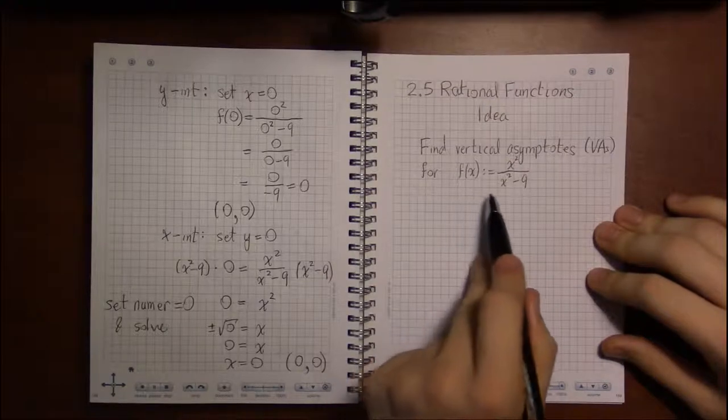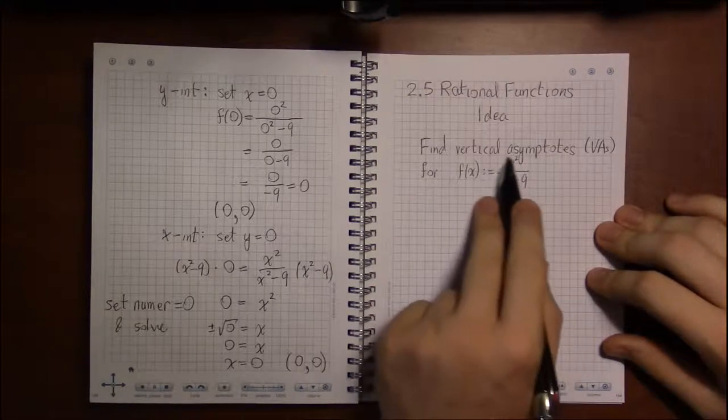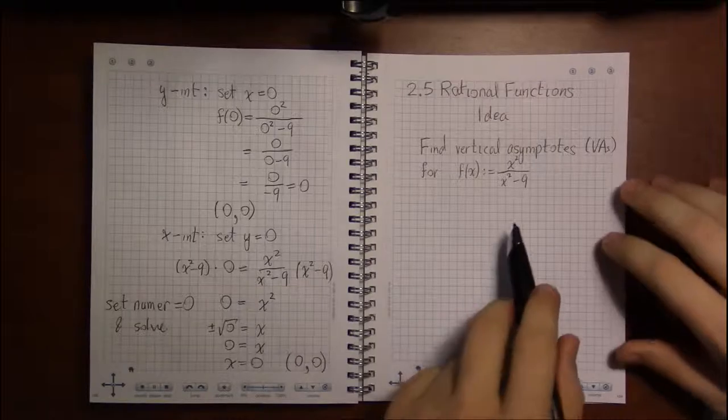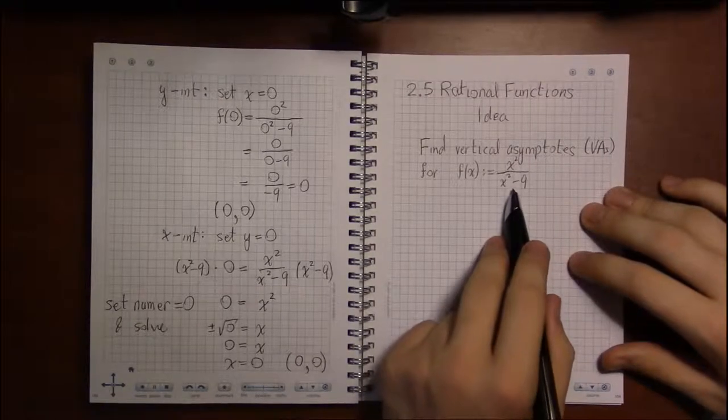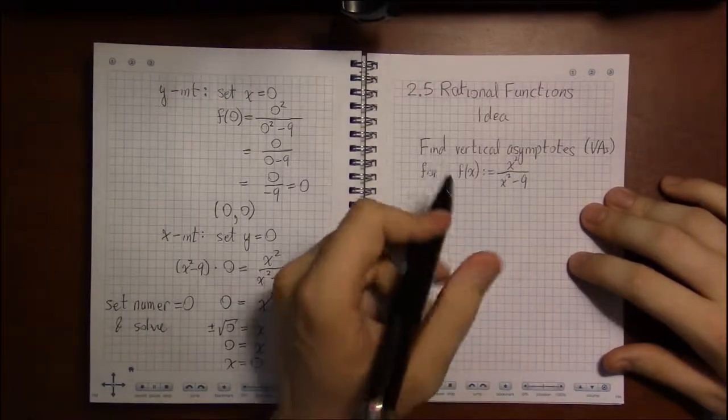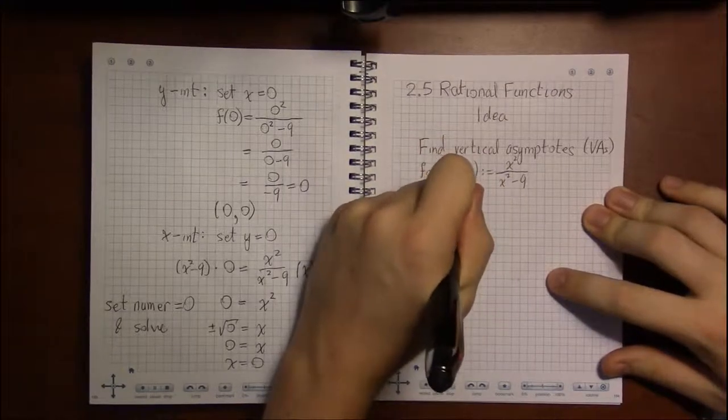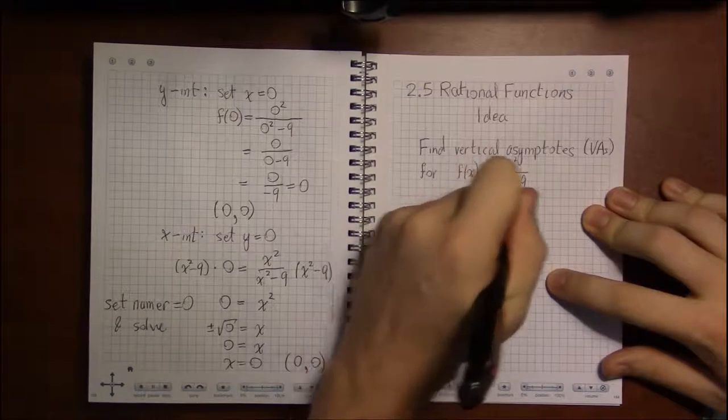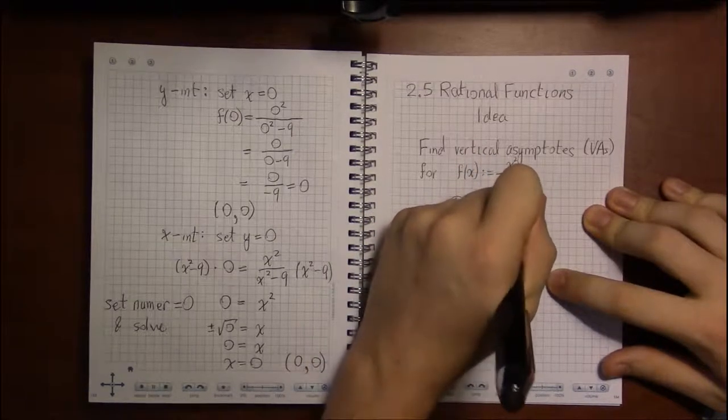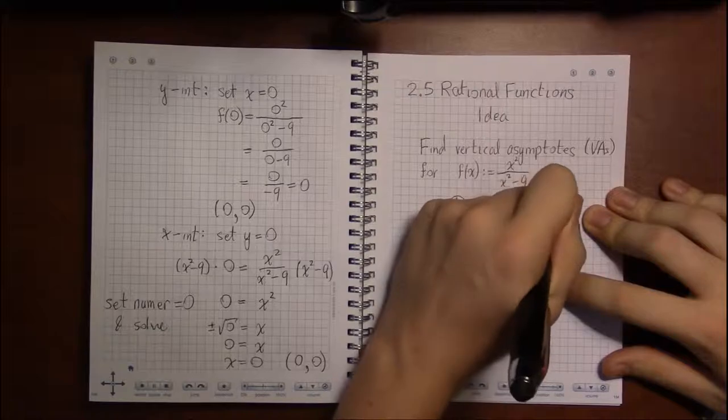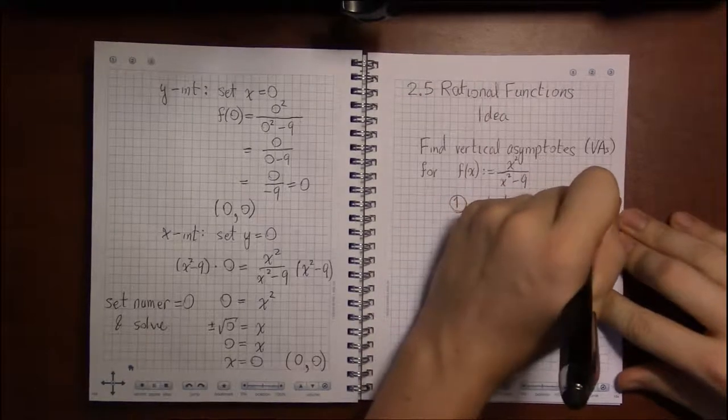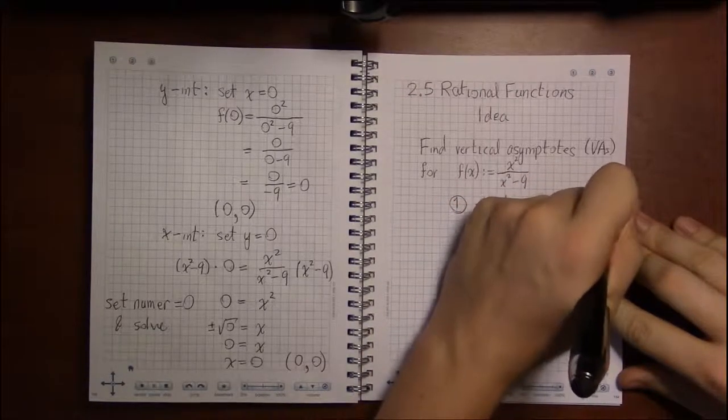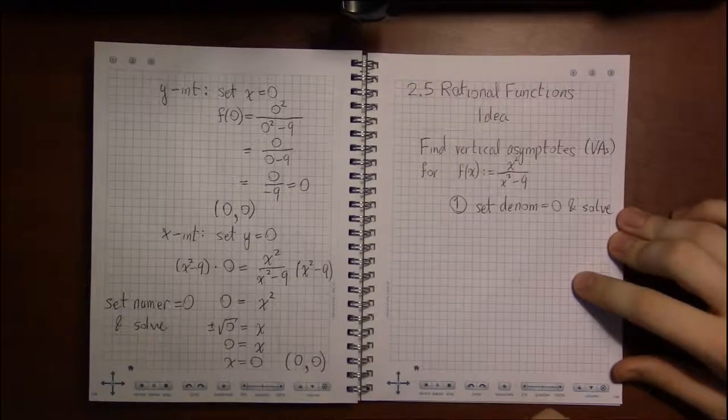To find the vertical asymptotes of a rational function, of a fraction function, it's fairly simple. If you have it in reduced terms, then all you need to do is start by setting the denominator equal to zero and solve.